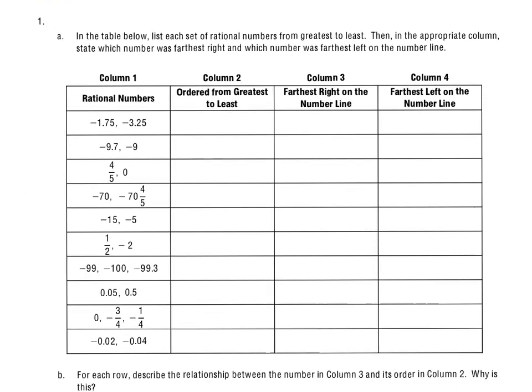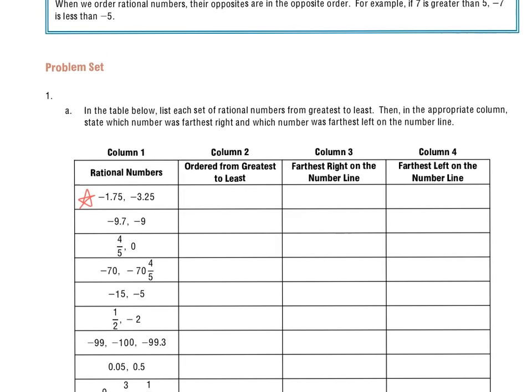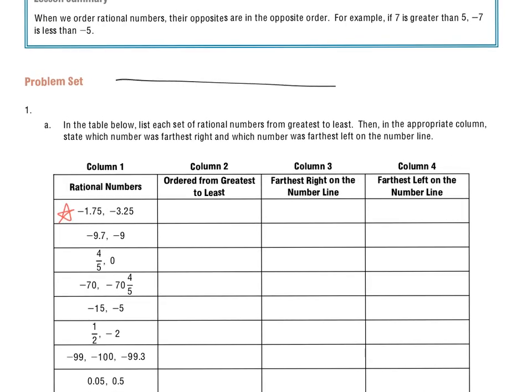So I'll slide it up a little bit so we can take a look at that first one. Negative 1 and 75 hundredths, and negative 3 and 25 hundredths. So what I'll do, just for this first one, is I'll draw a number line to show it. There's 0...